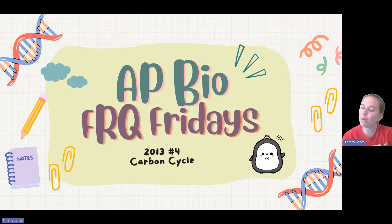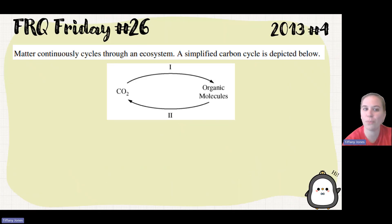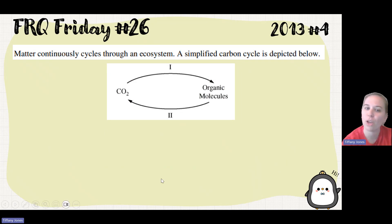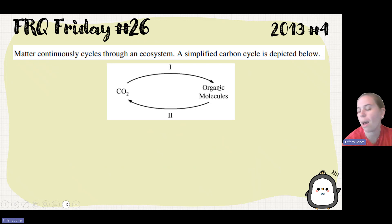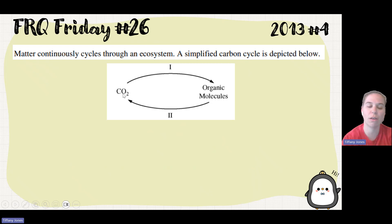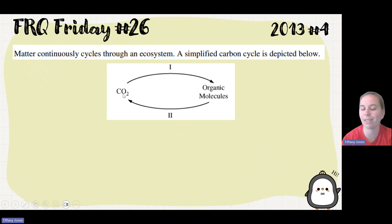I'm going to be doing 2013 number four on the carbon cycle. Matter continuously cycles through an ecosystem. A simplified carbon cycle is depicted below. Here we see carbon dioxide going through step one, which generates our organic molecules, and then it goes through step two, which is going to allow us to then have that carbon dioxide again.